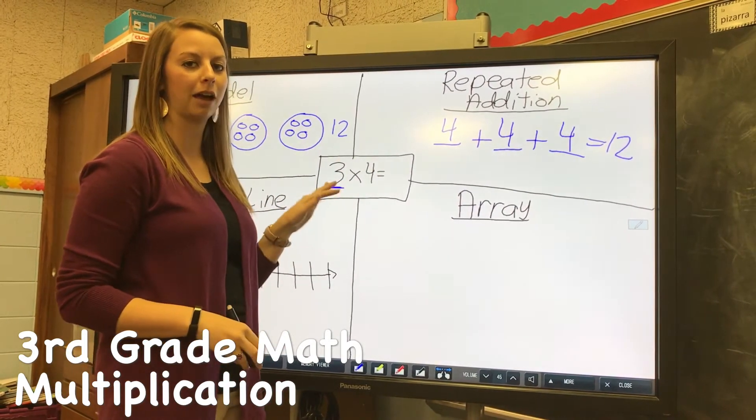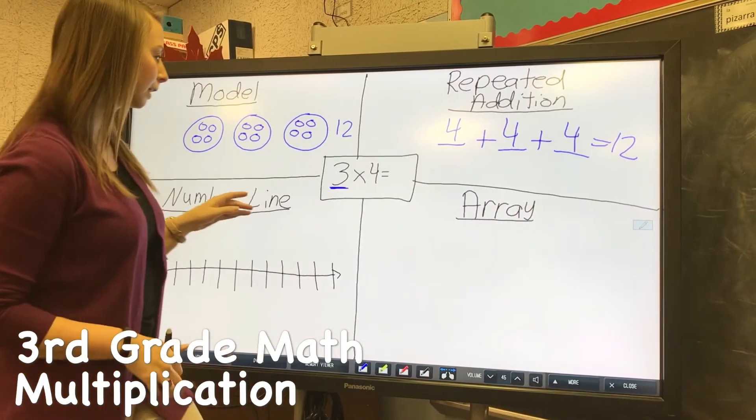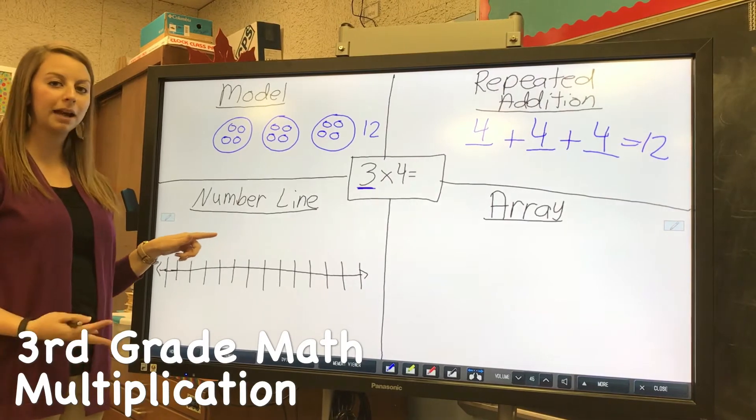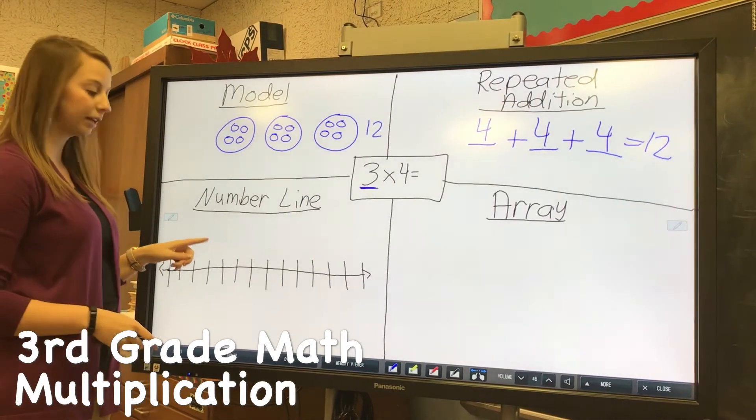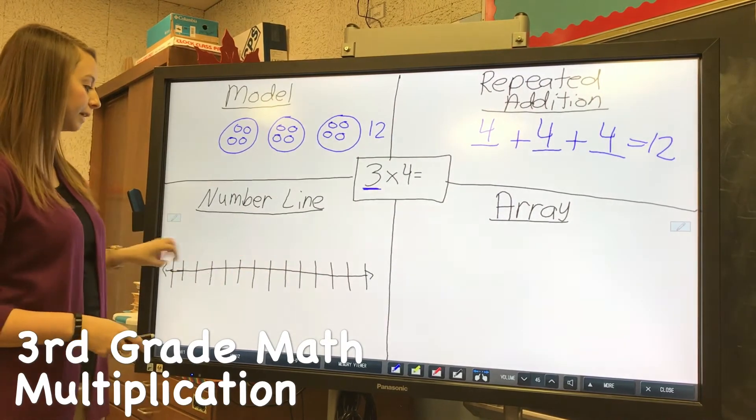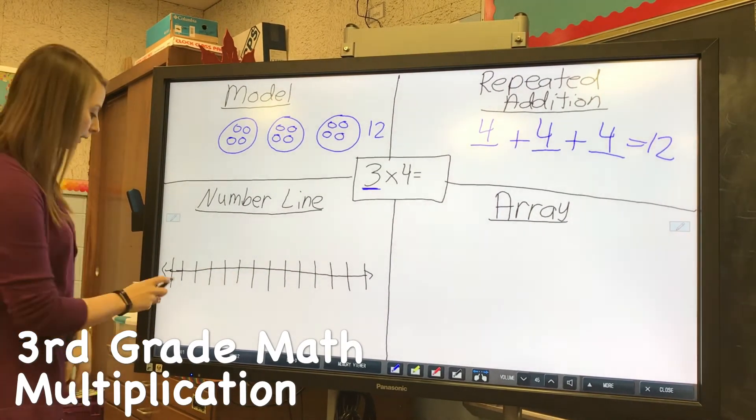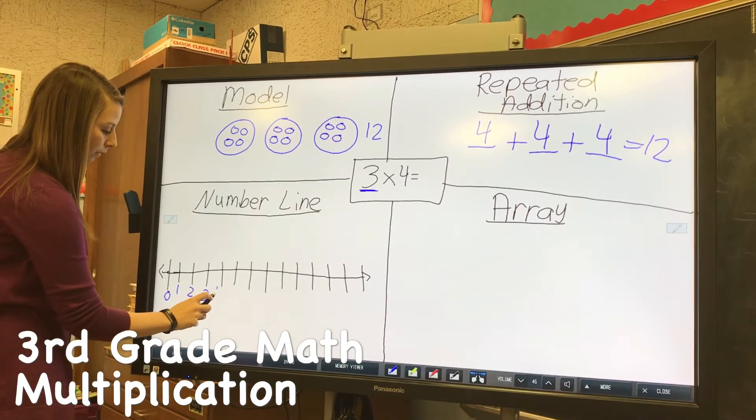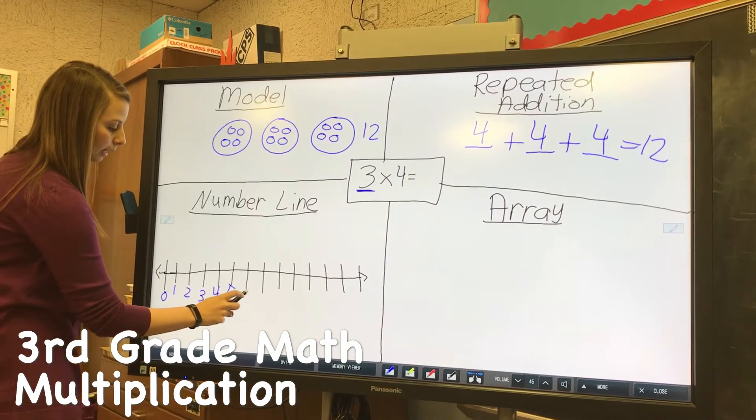Another strategy you can use is the number line and skip counting. An important thing on the number line is you want to make sure that all your spaces are equal and evenly spaced, and as you go through just make sure your numbers go right underneath your lines.